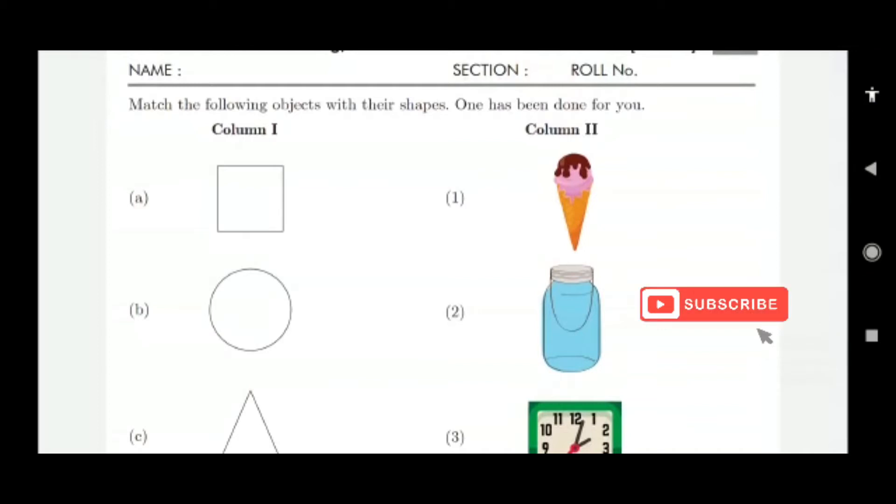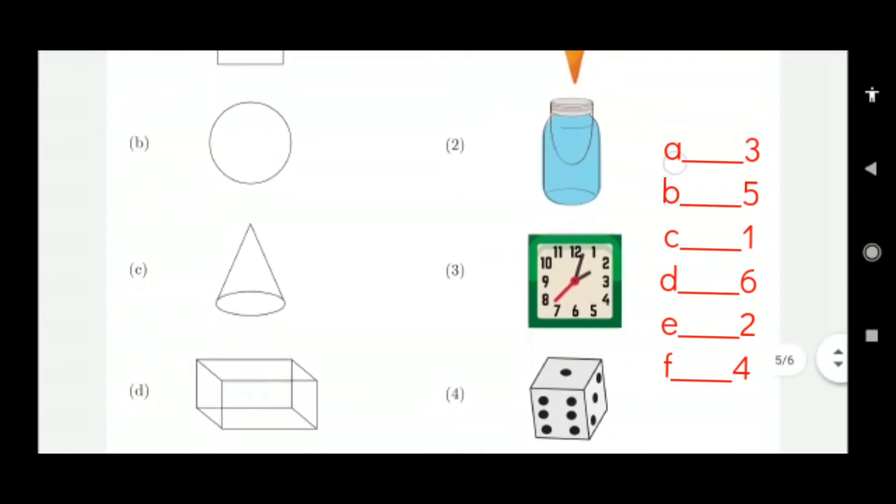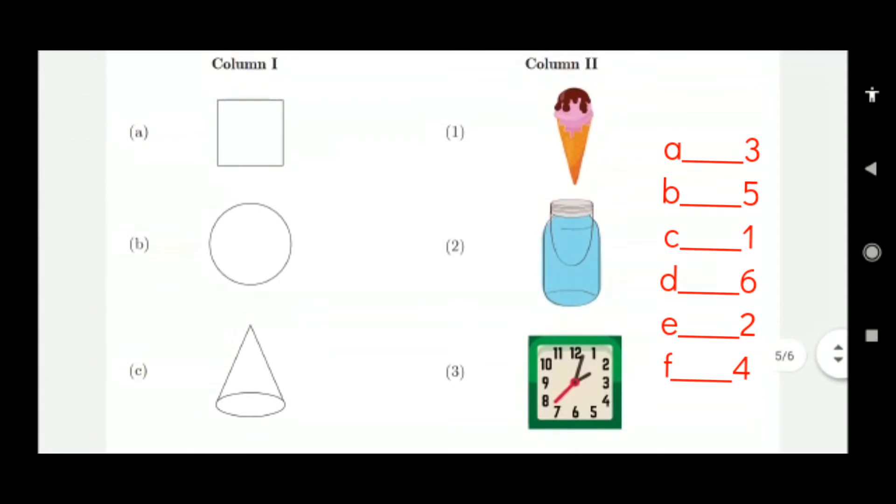But now it is matching. Now shapes are given and items are given. You have to make line matching. What is this? This is square. Which is the square item here? Square item is clock. From A to 3 you put a line, clock and this is same.